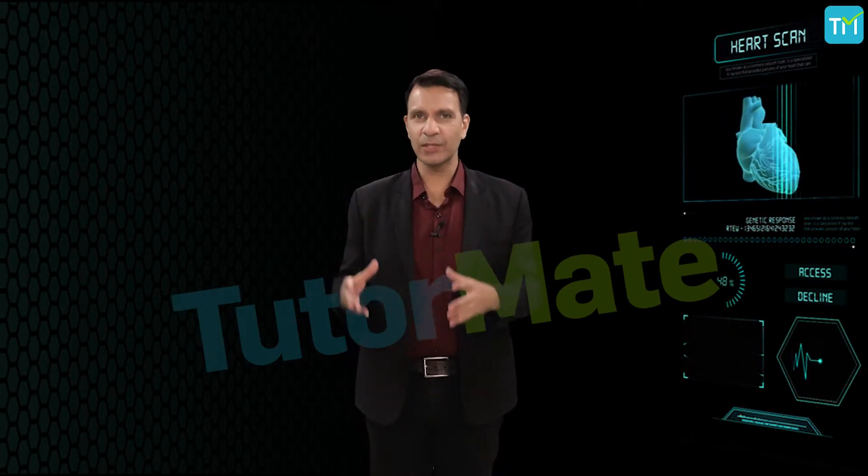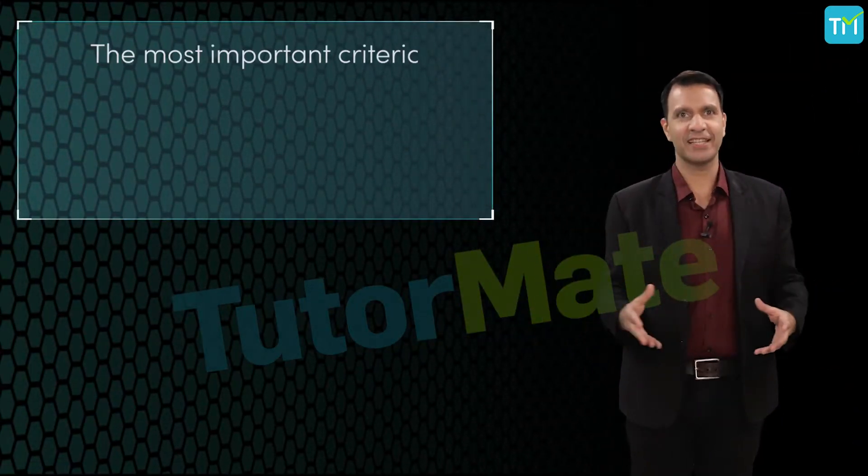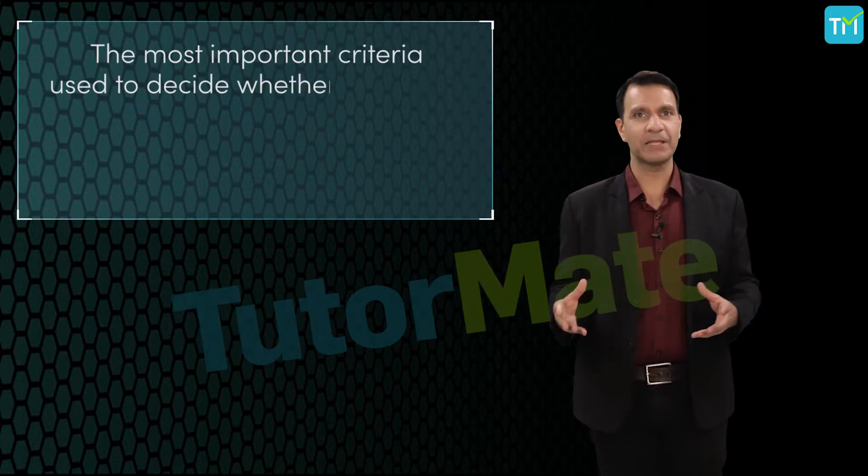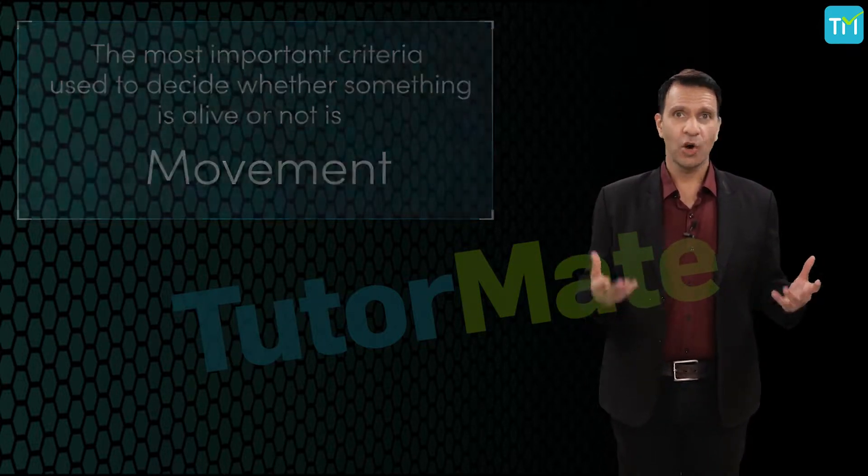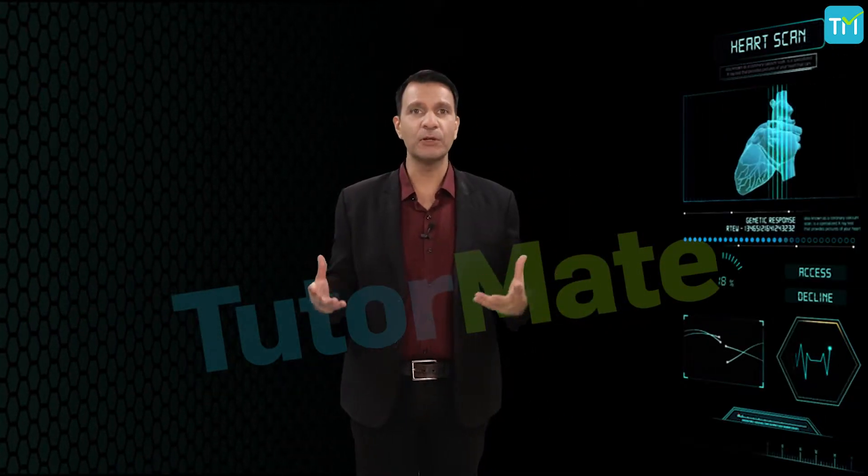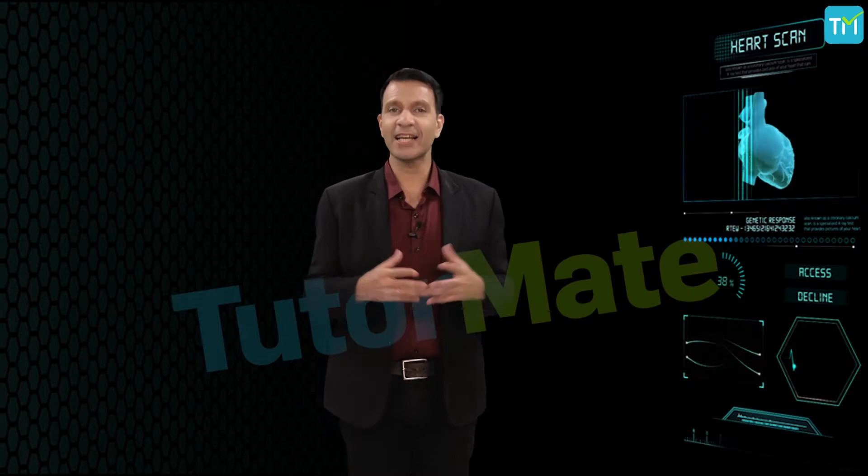Now an important question that arises here is: is there a certain criteria to decide whether something is alive? There is. The most important criteria used to decide whether something is alive or not is movement. All living things that are capable to move by themselves without any external help are said to be alive.